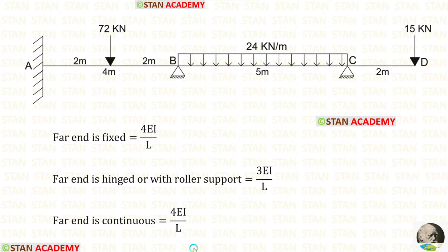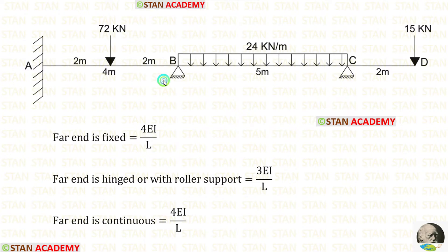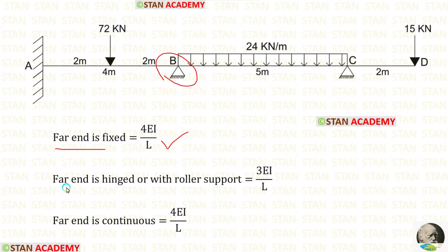In the moment distribution method, we have to calculate the distribution factor. We calculate it only at joint B, because at joint C we can easily state the values. For the overhanging side (CD), the distribution factor is 0, and for the other side (CB), it is 1. To calculate the distribution factor, we first find the stiffness. If the far end is fixed, the formula is 4EI/L. If the far end is hinged or has a roller support, the formula is 3EI/L. If the far end is continuous, the formula is 4EI/L.